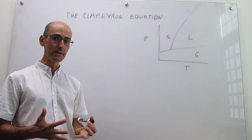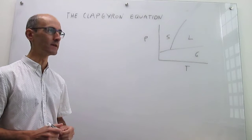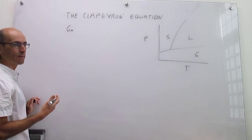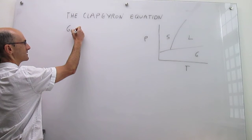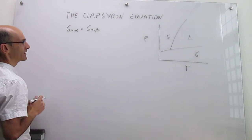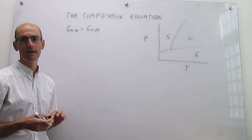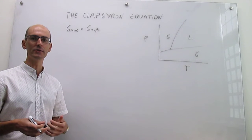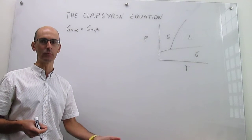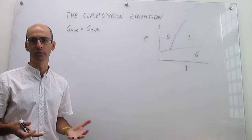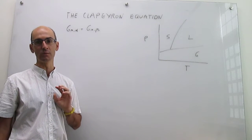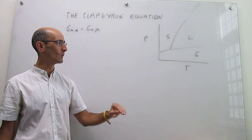In a phase boundary, what you have is an equilibrium between two phases. At heart, what you have is the molar Gibbs energy or chemical potential of two phases — I'm going to call them alpha and beta. You have that the molar Gibbs energy of those two phases is the same. Alpha and beta are just placeholders for any of the phases you may want, like liquid, gas, solid, or various solid phases. This equation is going to be universal — it applies to any phase boundary.